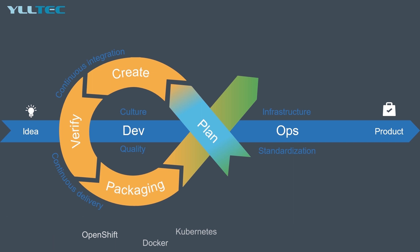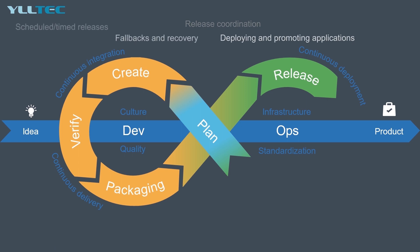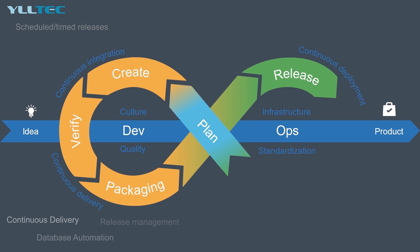With the finished package ready to be delivered, we move to the operations side of DevOps — the release stage, or continuous deployment. Release-related activities include schedule, orchestration, provisioning, and deploying software into production and targeted environments. Specific release activities include release coordination, deploying and promoting applications, fallback and recovery, and scheduled and timed releases. Disciplines include continuous delivery, database automation, and release management. Common tools include CA Automic, Octopus Deploy, and Azure DevOps Pipelines.